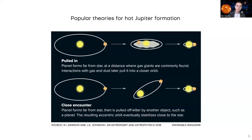The other leading theory is called high eccentricity migration, shown in the bottom diagram. Similarly, a giant planet forms far out from its star, and then after the disk material is expelled, it's launched into a highly eccentric inclined orbit due to scattering events with other giant planets in the system. Some gravitational interaction with another giant planet causes it to enter this highly inclined, highly eccentric orbit, and then gradually it loses angular momentum, circularizes as it inspirals close in, and finally aligns.